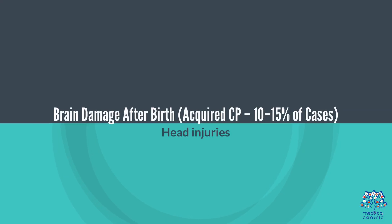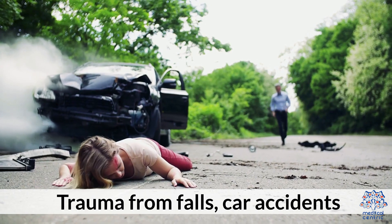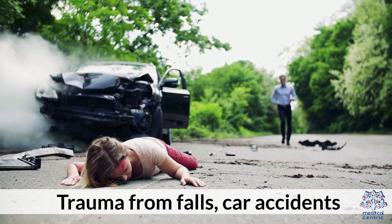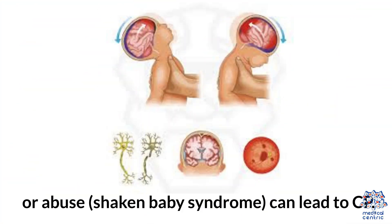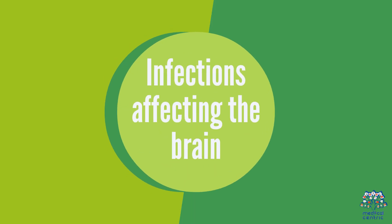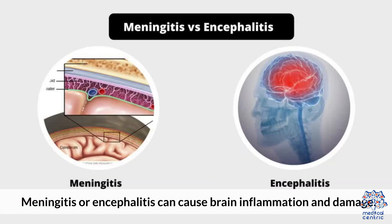Brain damage after birth, known as Acquired CP, accounts for 10–15% of cases. Head injuries from trauma — such as falls, car accidents, or abuse including Shaken Baby Syndrome — can lead to CP. Infections affecting the brain, such as meningitis or encephalitis, can cause brain inflammation and damage.